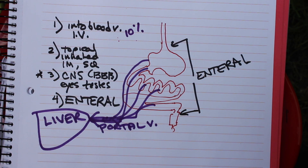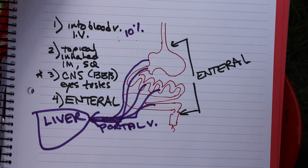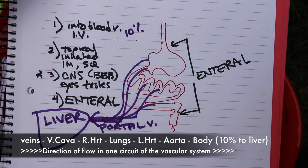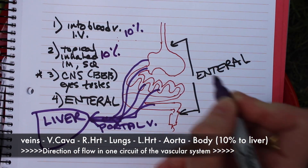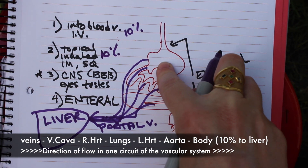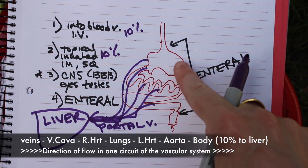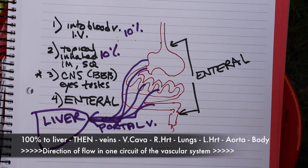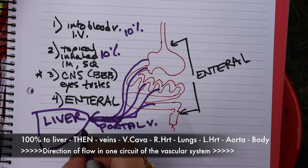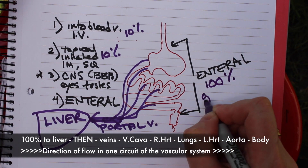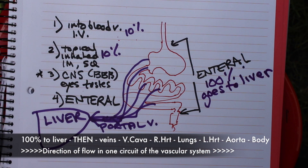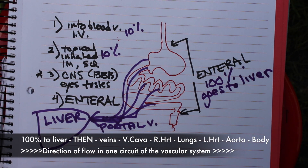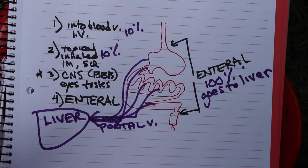Similarly, if you smear it on your skin, inhale it, or inject it into muscle or fatty tissue, that all drains into capillaries, then veins, then the inferior vena cava, right heart, lungs, left heart, body — and from there, about 10% goes to the liver. But if you swallow a pill or put the drug directly into the stomach, all of that drug that is absorbed — the first time it circulates — 100% of it goes to the liver. So if 100% of the drug goes to the liver, it is much more likely to be metabolized.